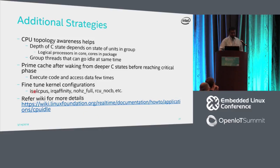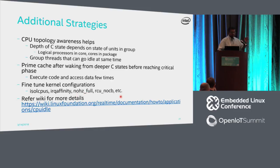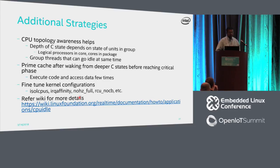Kernel configuration, boot parameters, and build configurations also matter and are documented in the wiki page. One area of interest is scheduling clock ticks — you can save more power by disabling periodic ticks. However, some options are known to create problems with CPU idle. The no-HZ full feature is undergoing more work in the Linux kernel, with constant improvements being made for the real-time use case.